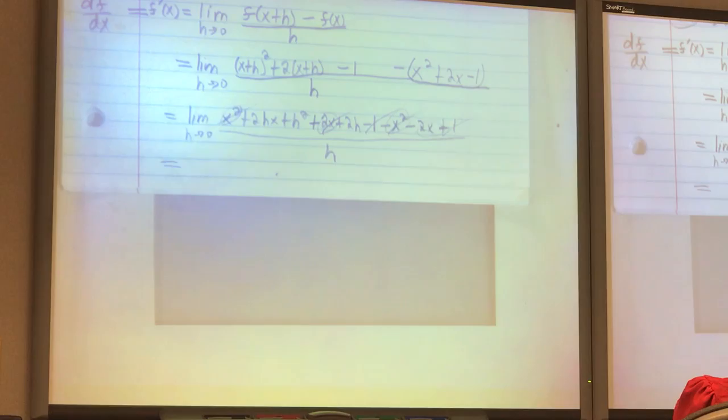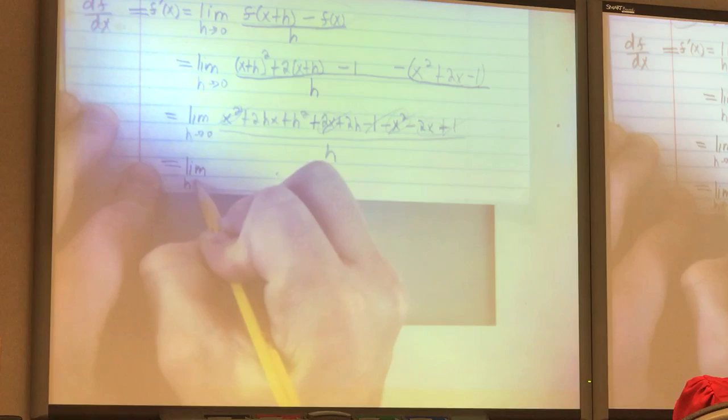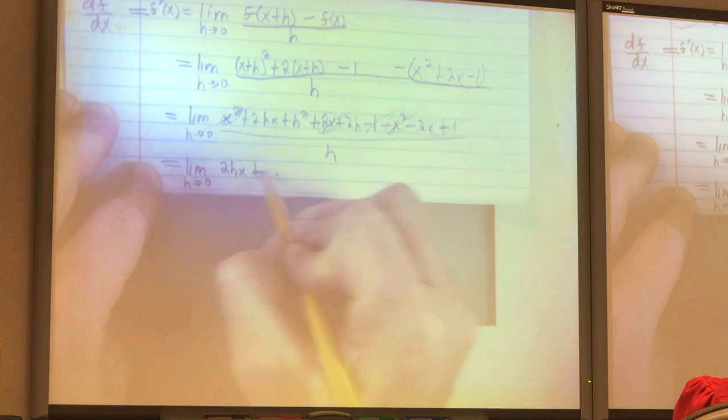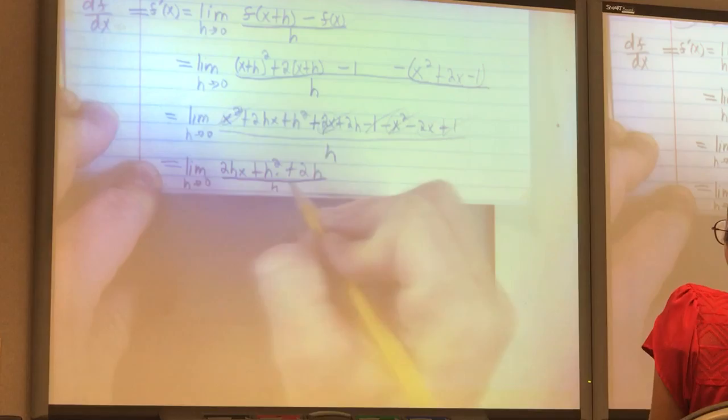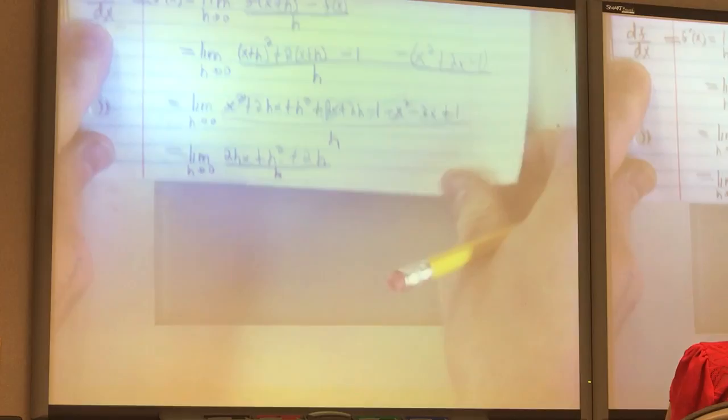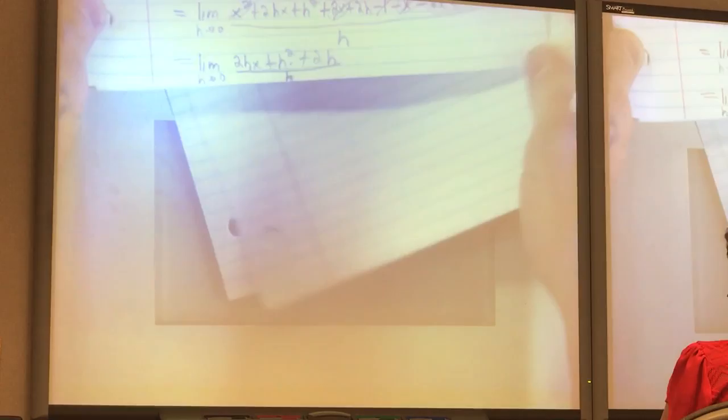So, we still have the limit. What's left on the top? 2hx plus h squared. What else is in there? 2h. That's 2h. Anything else? So, this whole thing divided by h. And I will continue the rest on the next page. I will put the page right below this one.